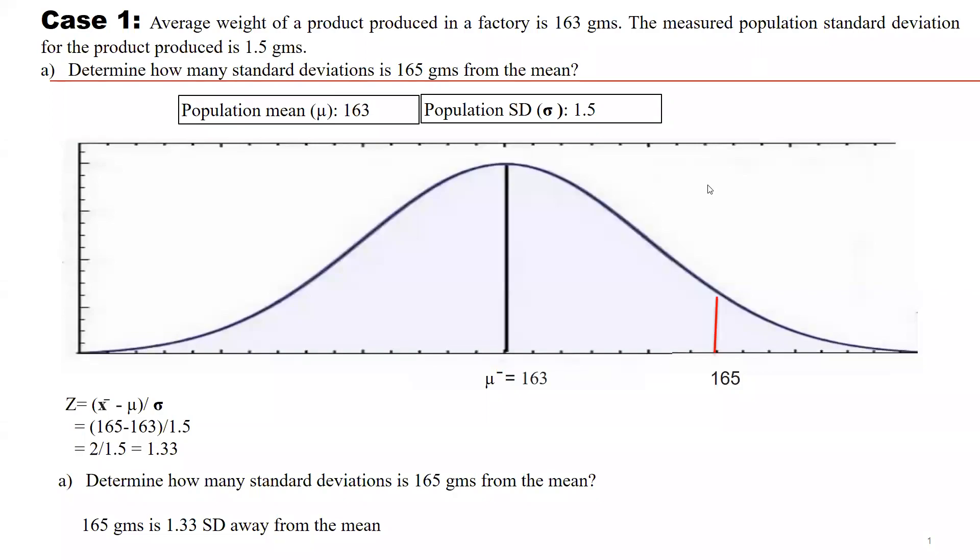Hi, everyone. Let's understand how we can calculate probability of accepting null hypothesis and rejecting alternate hypothesis, or vice versa, accepting alternate hypothesis and rejecting null hypothesis.